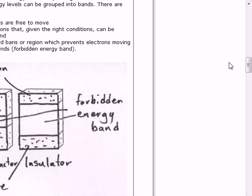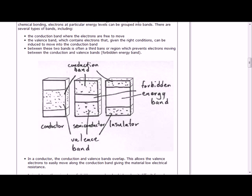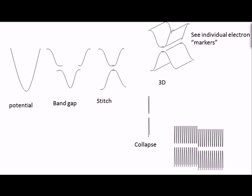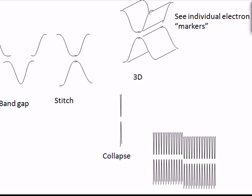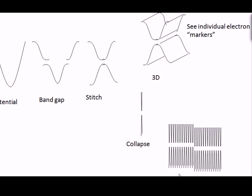Here's the picture of the band diagrams. The left is conductor — the bands fill together. On the right is insulator — there's a large forbidden energy band. We're going to look at the origin of the energy bands. The middle is a semiconductor — it's a small band, and the temperature can excite electrons across it.